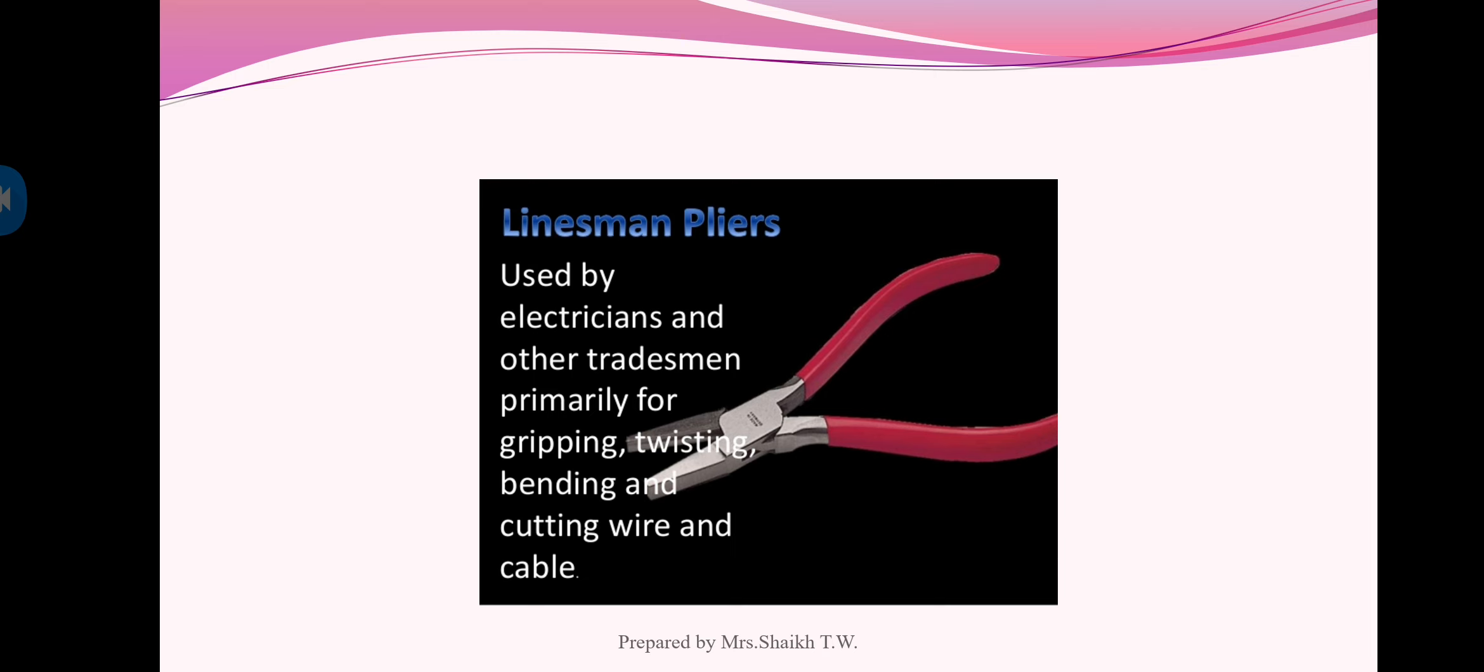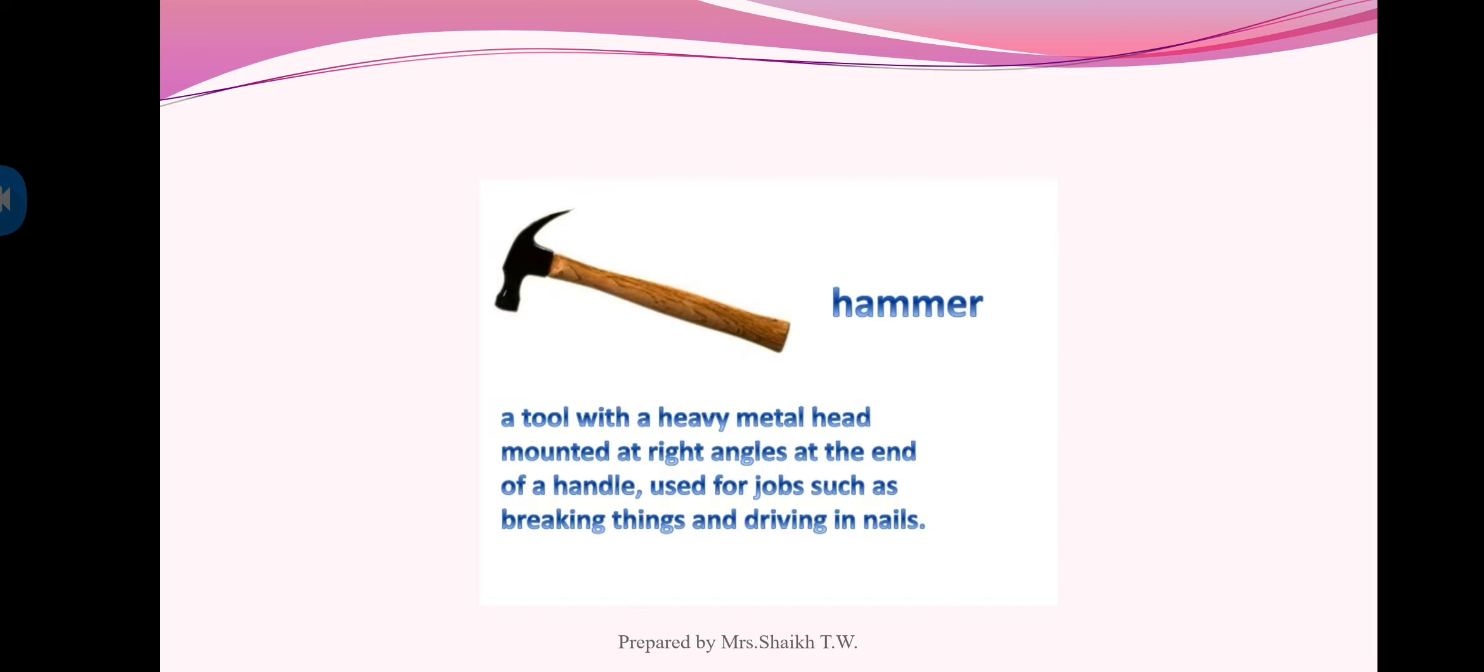Next is hammer. A tool with heavy metal head mounted at right angle at the end of handle, used for jobs such as breaking things and driving in nails. The hammer is made up of iron and the handling part is made up of wood.